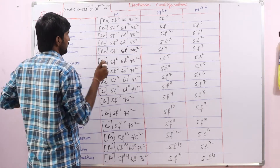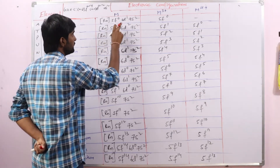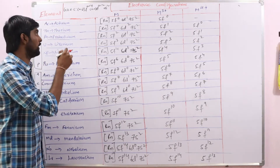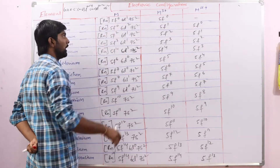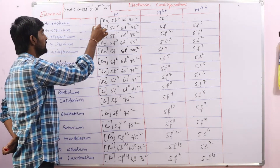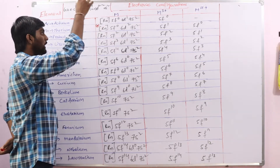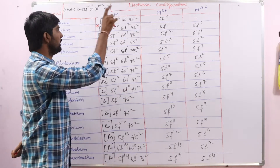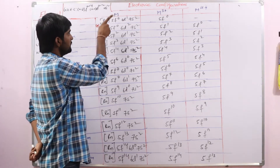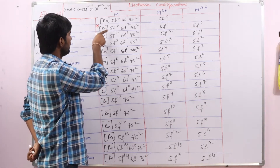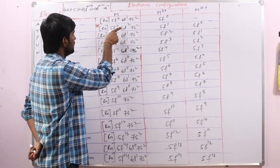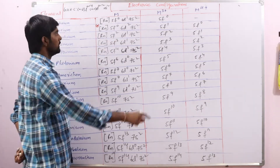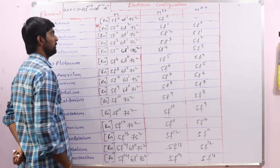For thorium, we expect 5F1, 6D1, 7S2 — meaning the electron should enter into the 5F orbital — but here what happens is the electron goes to the D orbital instead. This is the first exceptional electronic configuration we should remember, that is for thorium. The expected configuration is 5F1, 6D1, 7S2, but the actual configuration is 5F0, 6D2, 7S2. The energy difference between these two is very less, so the electron enters into the D orbital.